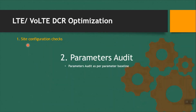Once you finish the site configuration check for RET, RTT, and cross feeder, you have to move to the second part — parameter audit. Parameter audit is very important for any network optimization and is especially important for DCR optimization. Parameter optimization itself is a very big part, so I am not covering the whole parameter audit in this video — I will create a separate video for it. Parameter audit can be done by script, by tool, or manually, depending on your organization. Here I will show you some results where we did some parameter changes and got good improvement in VOLTE DCR KPI.